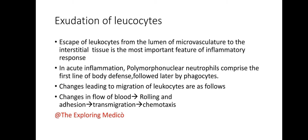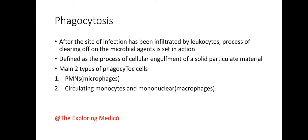In acute inflammation, polymorphonuclear neutrophils comprise the first line of body defense, followed later by phagocytes. The changes leading to migration of leukocytes are: changes in blood flow, rolling and adhesion, transmigration, and chemotaxis.